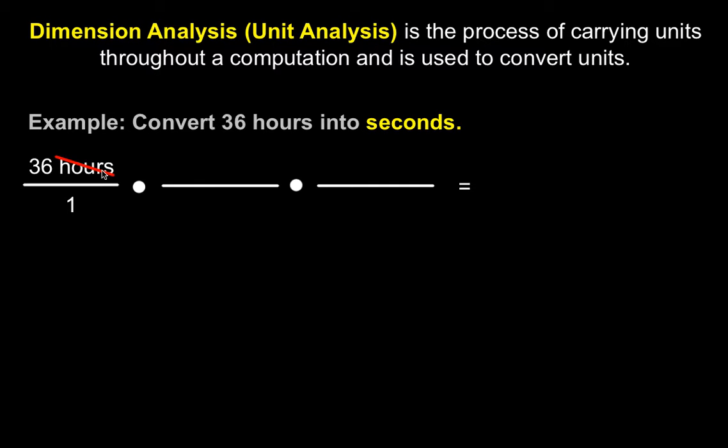Now think about cross-canceling. If I want to cancel out the hours label here, in order to cross-cancel the hours, I need to make sure that I have another hours label in the denominator. So I know in one hour, there are 60 minutes. So 60 minutes is written on top. The red slashes just indicate that those labels are now cancelled out.